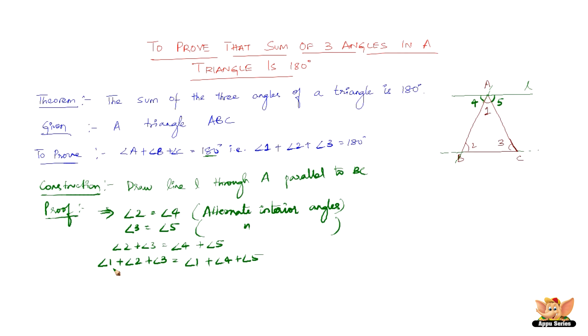So angle 1 plus angle 2 plus angle 3 equals angle 1 plus angle 4 plus angle 5. Now the sum of angles on a straight line is 180 degrees. So angle 4 plus angle 1 plus angle 5 equals 180 degrees.